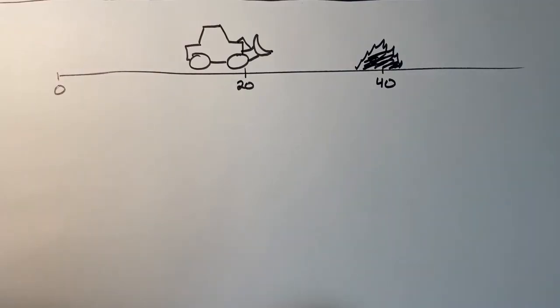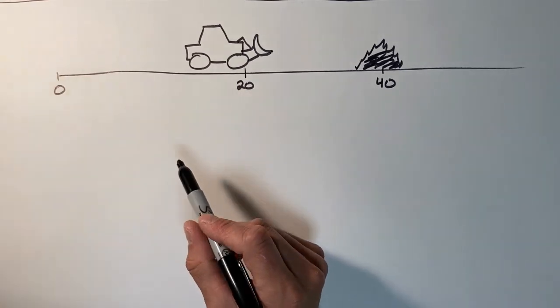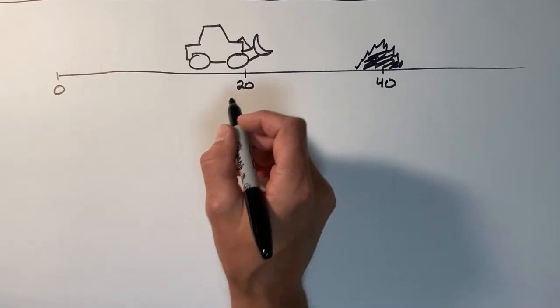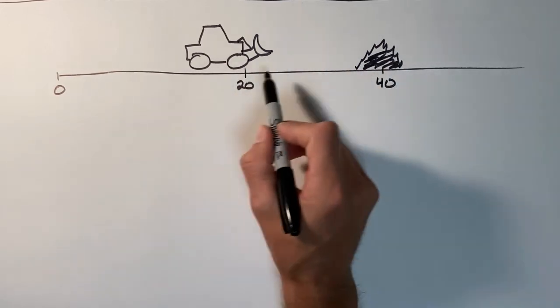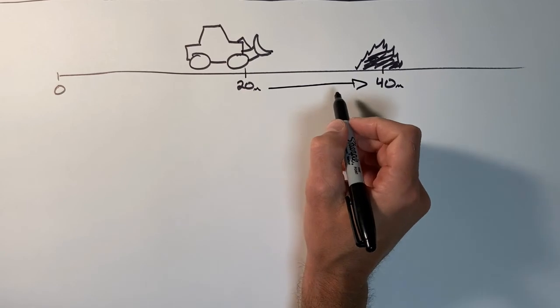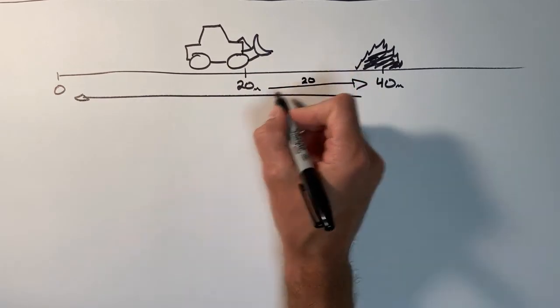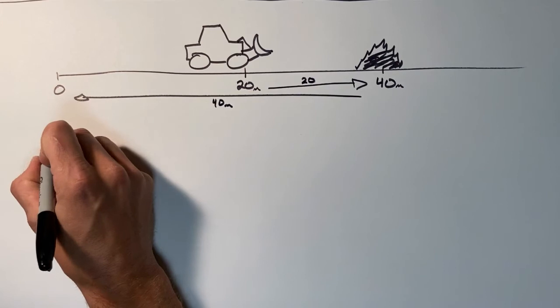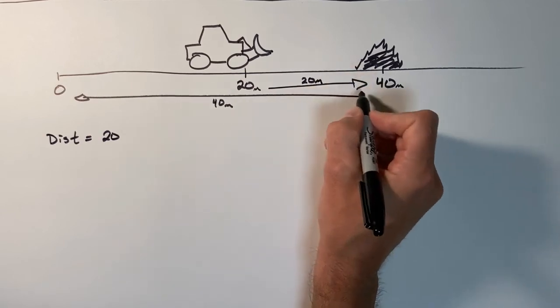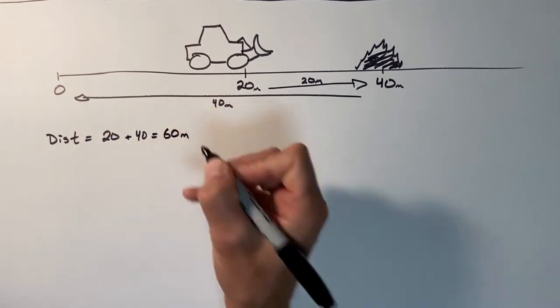What we're trying to do is we're trying to go through and solve for the total distance traveled as well as displacement in this problem. Distance, much like the other problems, is going to be relatively simple here. Our bucket loader is going to go 20 meters this way, that is from 20 to 40, so it's a distance of 20 meters traveled this way, followed by 40 meters to come all the way back. So our distance is going to be 20 traveled to the right plus the 40 back to the left. That's going to give us a total distance of 60 meters traveled.